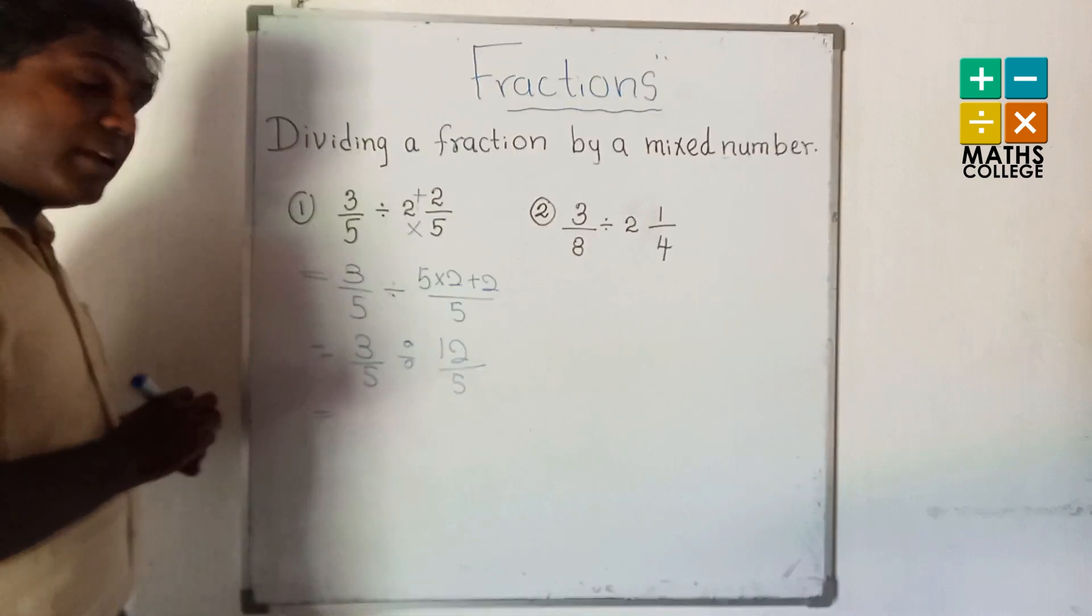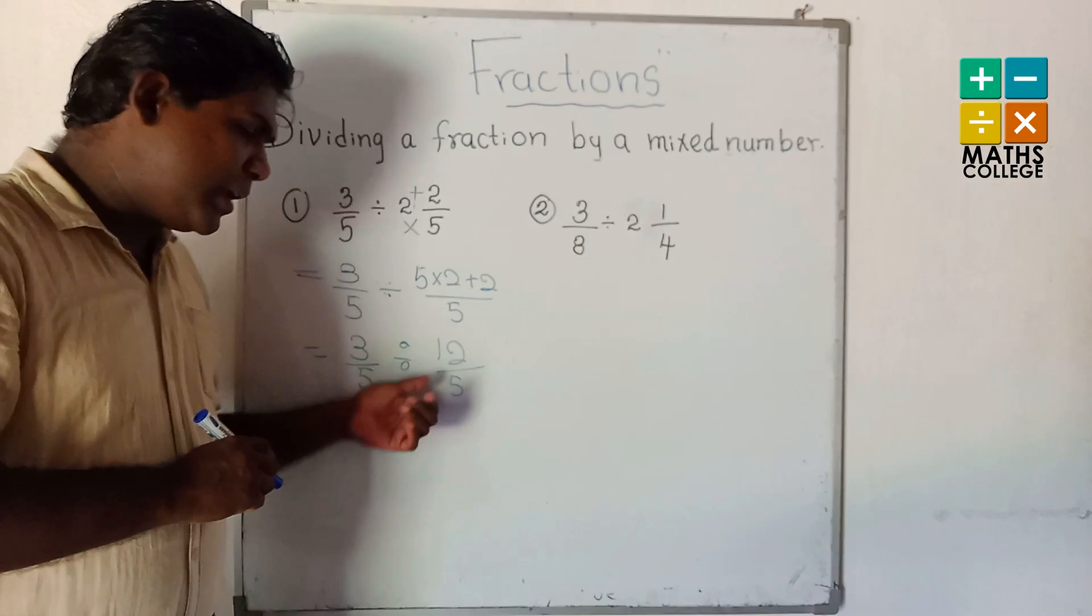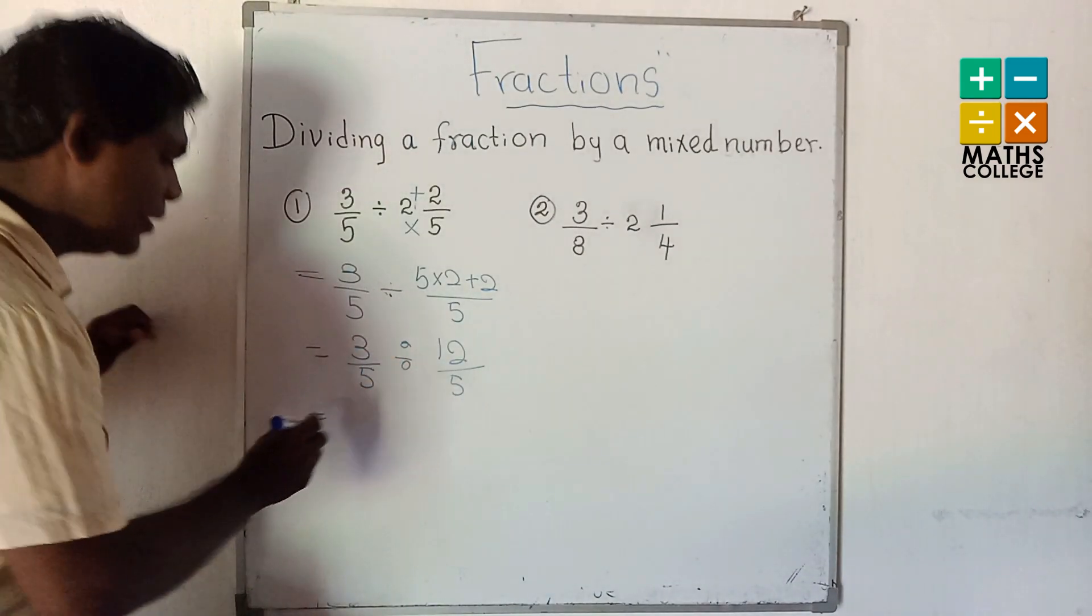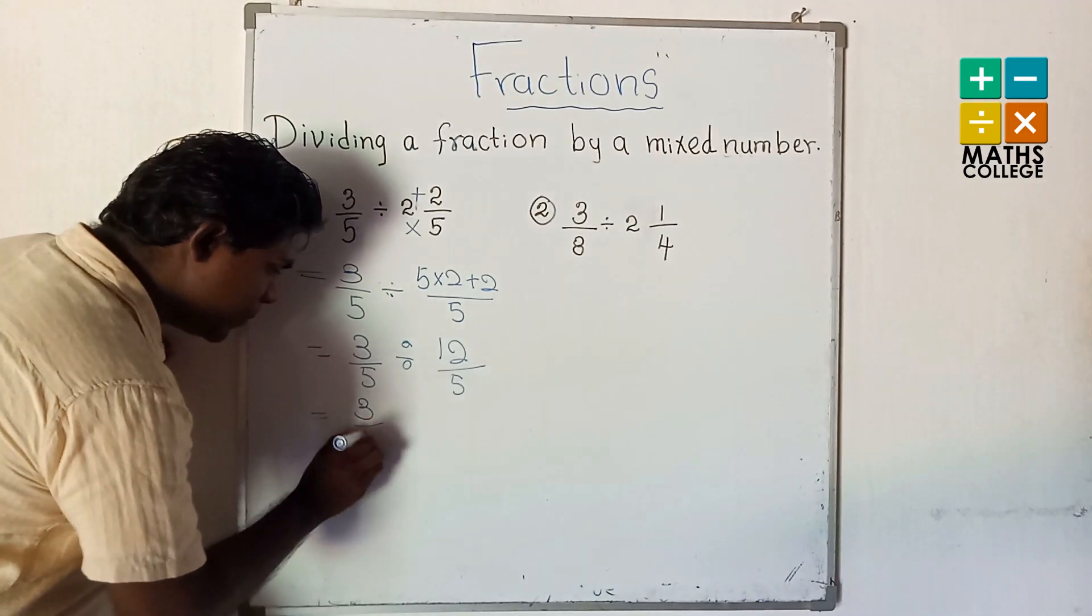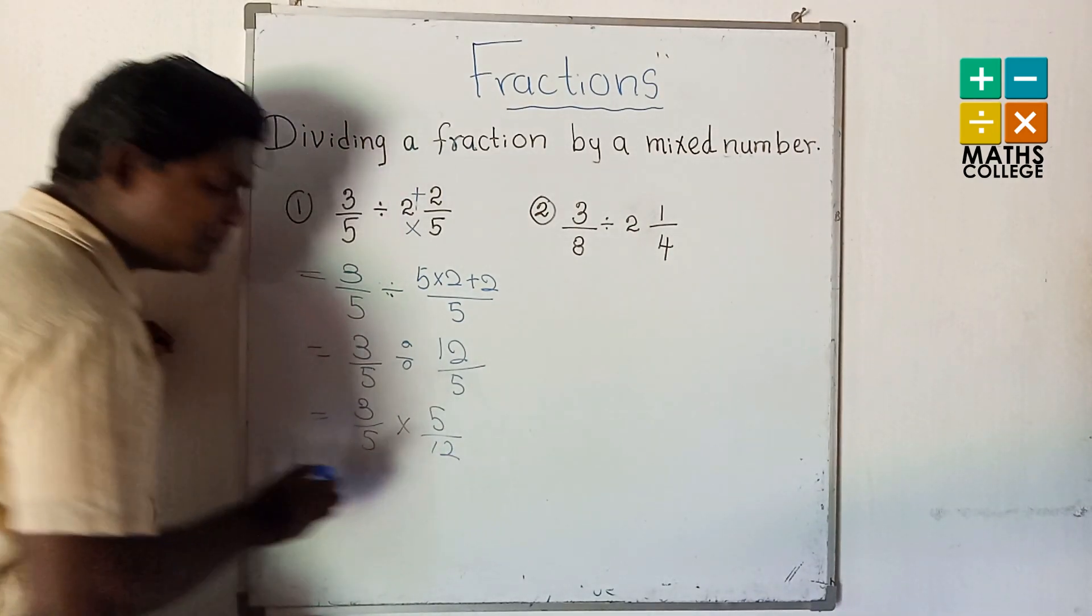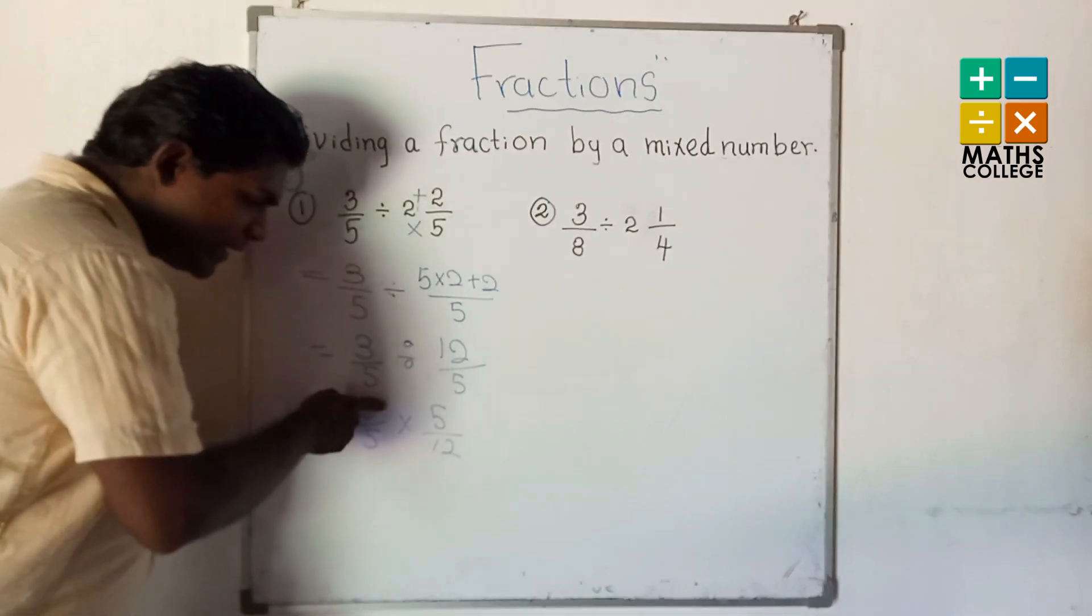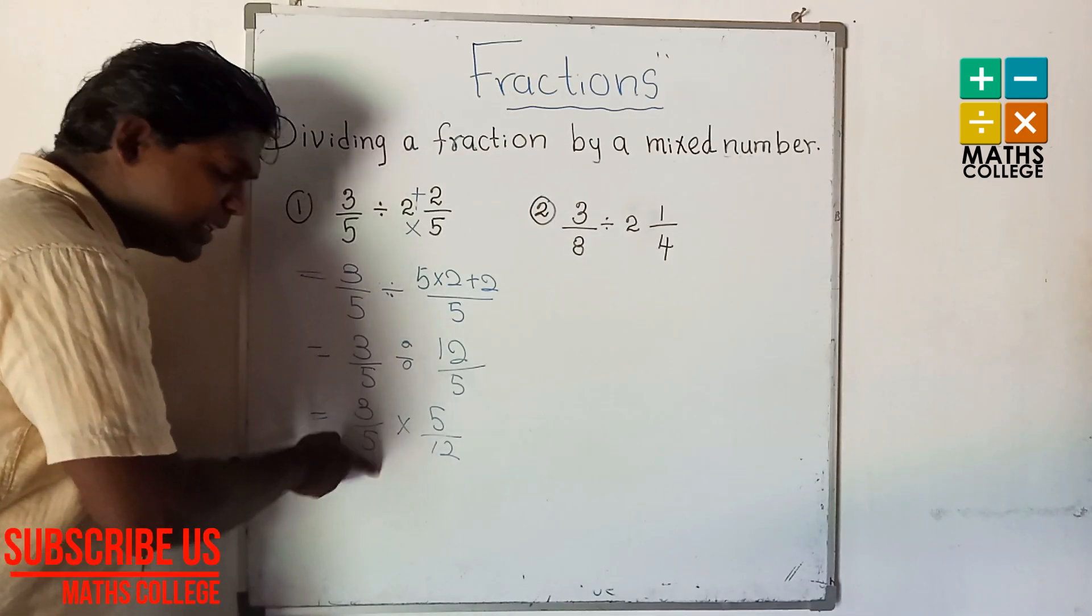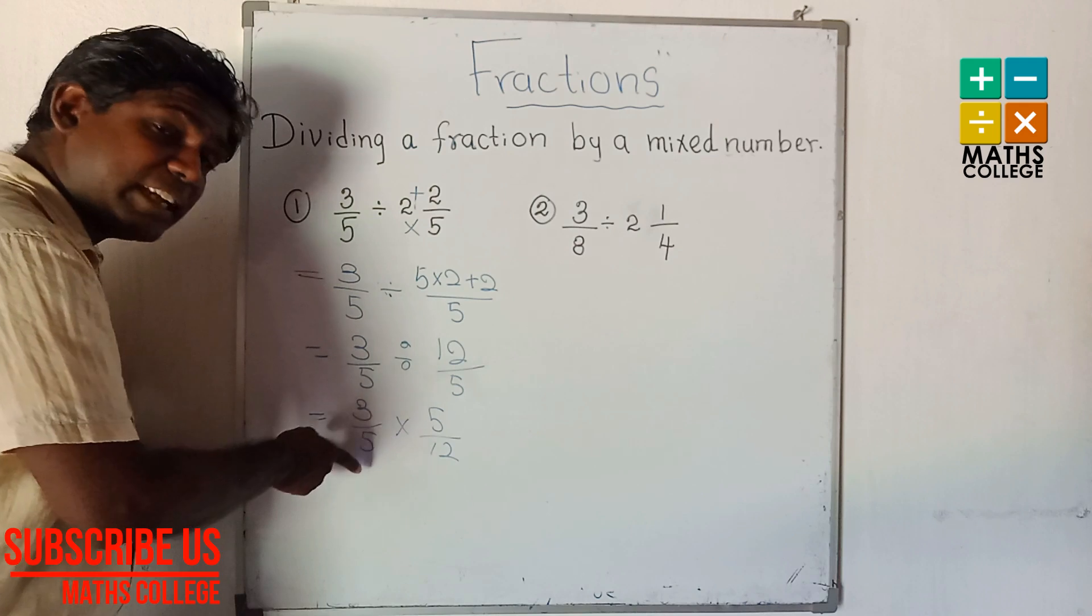Now can we write this as a reciprocal and multiply? 3 upon 5 multiply 5 upon 12.